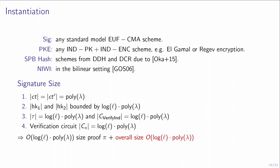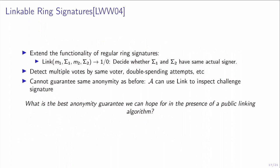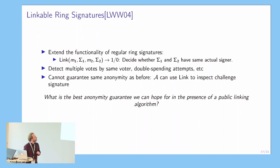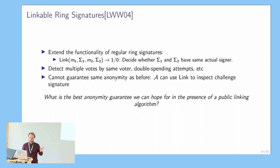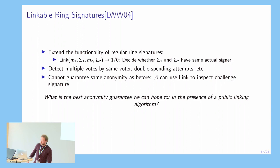That was our first construction of plain ring signatures. Now I will talk about the linkability aspect. Linkable ring signatures provide an additional functionality: you can publicly check whether two signatures were actually created by the same signer. This can be used to detect multiple votes by the same voter or double-spending attempts. We cannot give the same strong anonymity guarantees as before, since the adversary could use the public linking algorithm to check whether the challenge signature links to any previously seen signature of the challenge users.